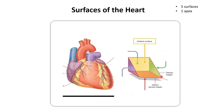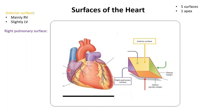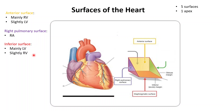The anterior surface is mostly made up of the right ventricle and partly made of the left ventricle. The right pulmonary surface faces the right lung and is made up of the right atrium. The inferior surface, also called the diaphragmatic surface, is mostly made up of the left ventricle and partly made of the right ventricle.